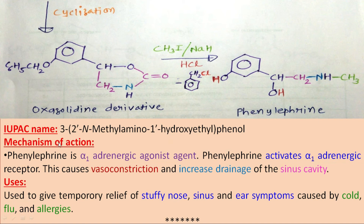Now, the mechanism of action. Phenylephrine is an alpha-1 adrenergic agonist agent. It activates the alpha adrenergic receptor, which causes vasoconstriction and increases the drainage of the sinus cavity. Whatever is present in the nasal cavity, its drainage will be increased by phenylephrine. This is the mechanism of action of phenylephrine.